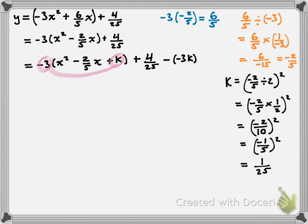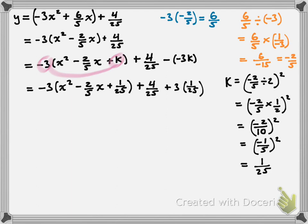We place k into the expression: negative 3 times x squared minus 2 over 5x plus 1 over 25, plus 4 over 25. And since we're subtracting negative 3k, that's the same as adding 3 times 1 over 25. In the next line, we factor the perfect square trinomial: x squared minus 2 over 5x plus 1 over 25 factors as x minus 1 fifth, all squared. And 3 times 1 over 25 gives us plus 3 over 25.